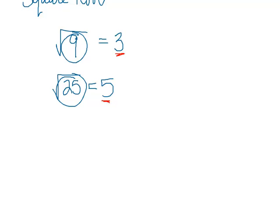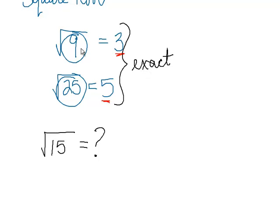On the other hand, if I ask you, what is the square root of 15? What number times itself is 15? You can't give me an answer. These are exact because these things under here are perfect squares.